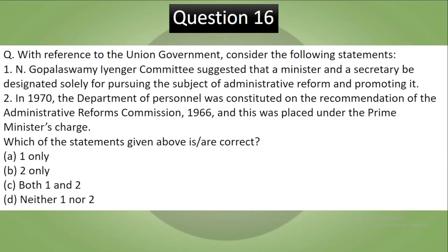Question 16: With reference to the union government, consider the following statements. Statement 1: The Gopalswami Iyengar Committee suggested that a minister and a secretary be designated solely for pursuing the subject of administrative reform. Statement 2: In 1970, the Department of Personnel was constituted on the recommendation of the Administrative Reforms Commission 1966, and was placed under the Prime Minister's charge.